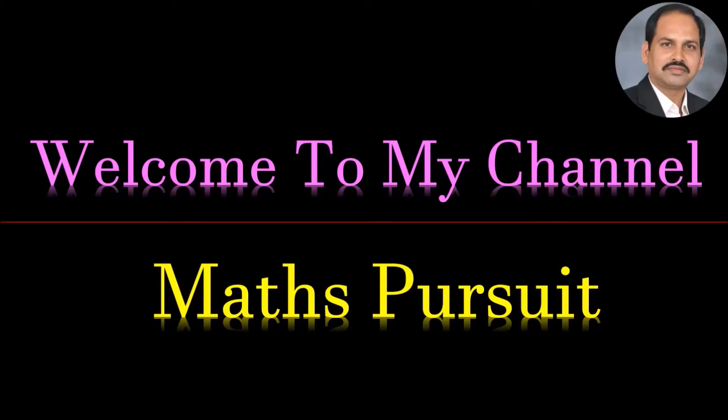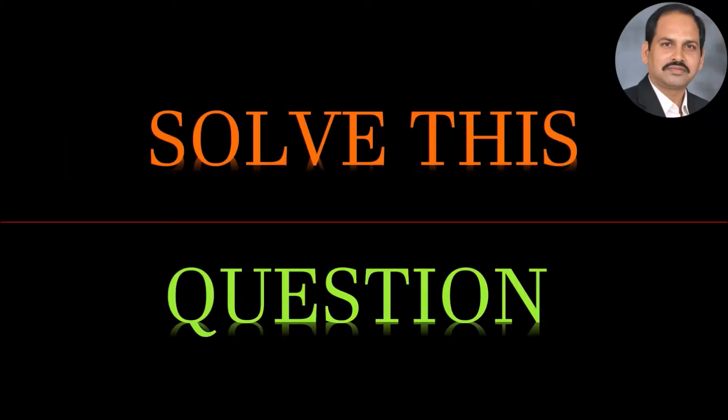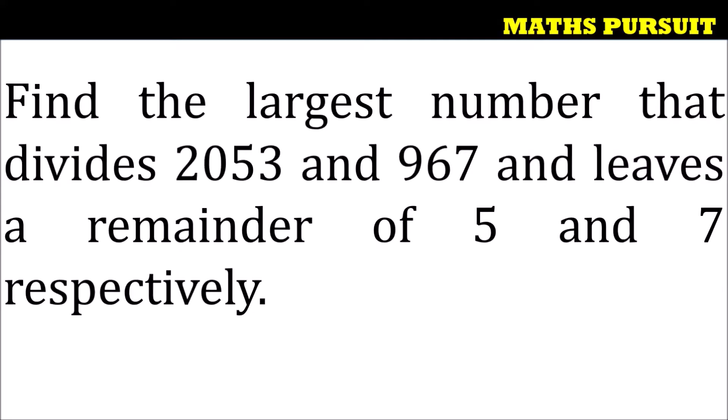Welcome to my channel Maths Pursuit. Today we will solve the given question: find the largest number that divides 2053 and 967 and leaves a remainder of 5 and 7 respectively. So let us see how we can solve this question.